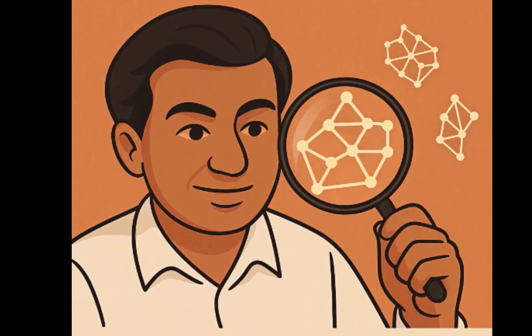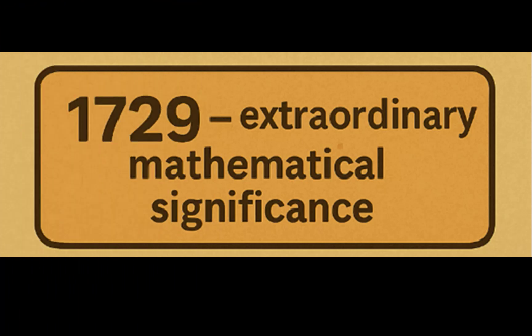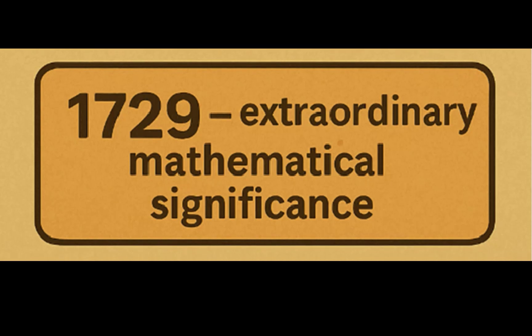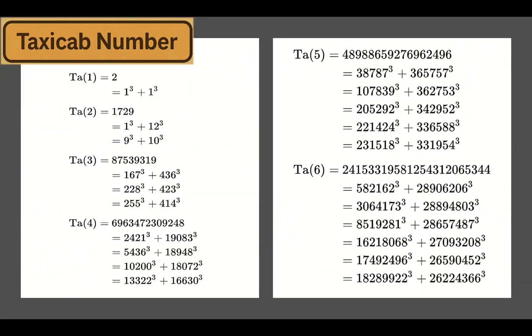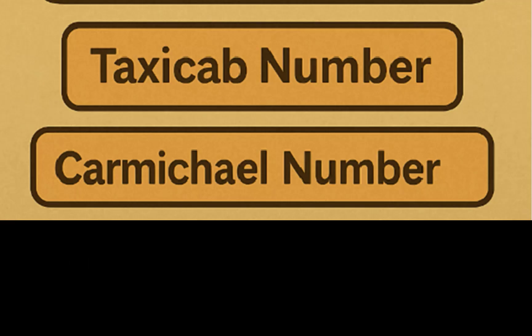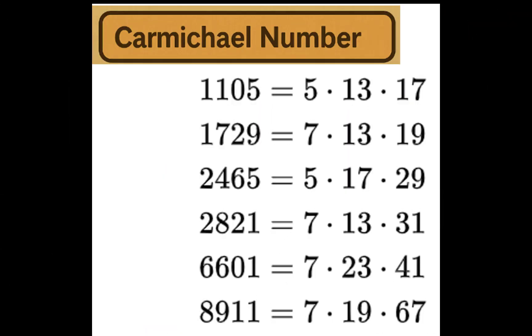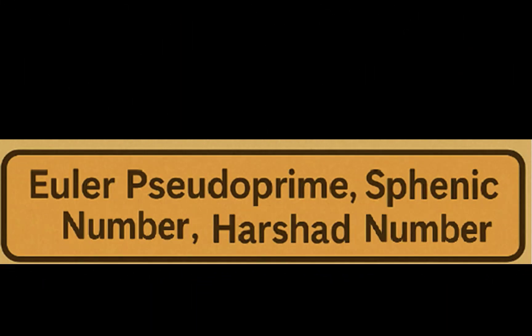Beyond its historical anecdote, 1729 carries extraordinary mathematical significance. Taxicab number, smallest integer expressible as two different sums of two cubes. Carmichael number, a rare composite number passing tests that usually detect prime numbers. Euler pseudoprime, Sfenick number, Harshad number, various fascinating numeric properties wrapped in a single integer.